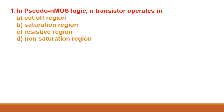First question: in pseudo NMOS logic, the N transistor operates in — option A: cutoff region, option B: saturation region, option C: resistive region, option D: non-saturation region. In pseudo NMOS logic, the N-MOS transistor operates in the saturation region.